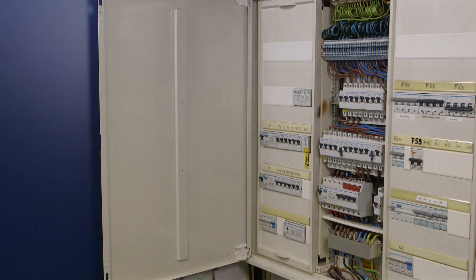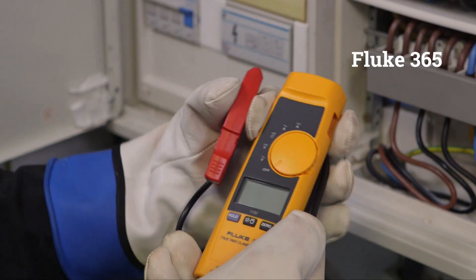The Fluke 365 is a rugged meter perfect for jobs where access to wires is difficult.